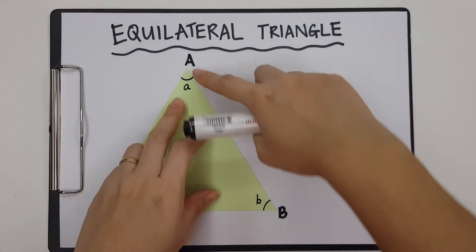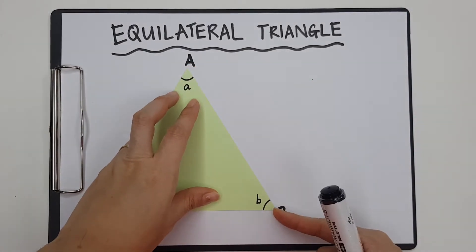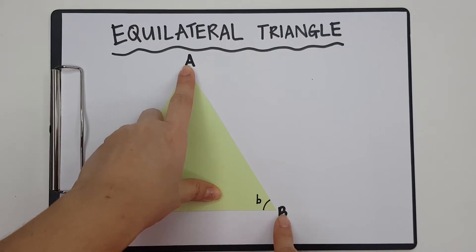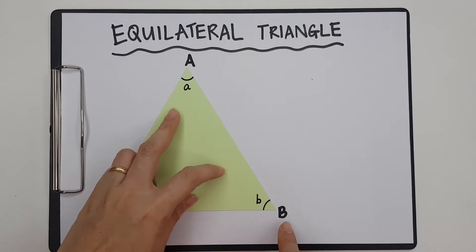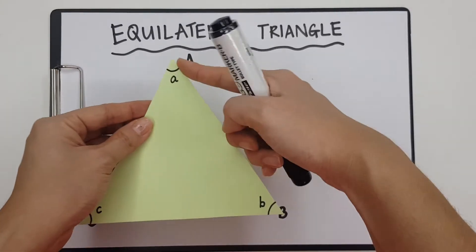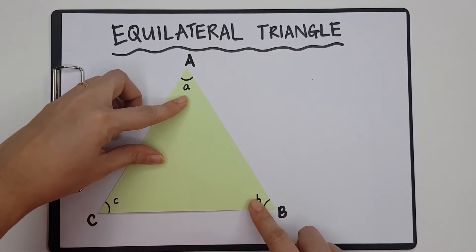So if I'm talking about this side of the triangle, I'm going to call it AB. When I have two vertices AB, it tells me it is a line. I cannot say line A because A is a point, neither can I say line B because B is a point. But if I want to talk about this whole side of the triangle, I'm going to call it AB.